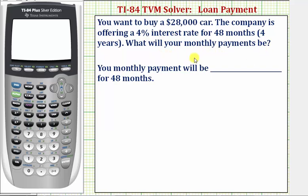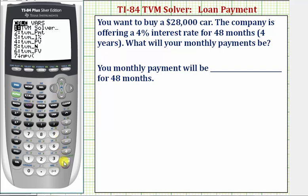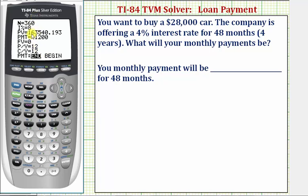Because you're making monthly payments, we also assume the interest rate is compounded monthly. To access the TVM solver, we press Apps, Enter, and then Enter again, and this is the TVM solver.